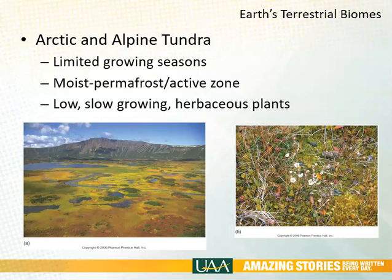Finally, we have Arctic and Alpine tundra areas, which have a very limited growing season, a lot of permafrost, and a very small but active zone that can support growth. The soils tend not to be very good because of frost heaving and cryoturbation. The plants tend to be very herbaceous, grow very slowly, and these are not very productive areas overall.